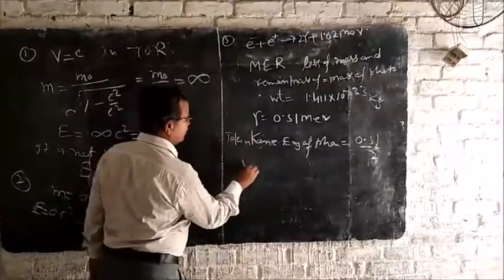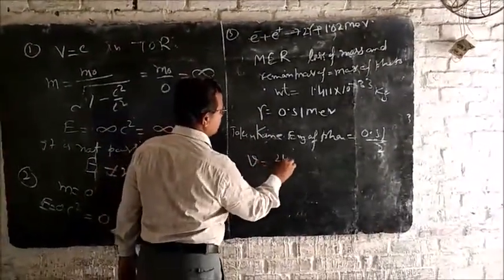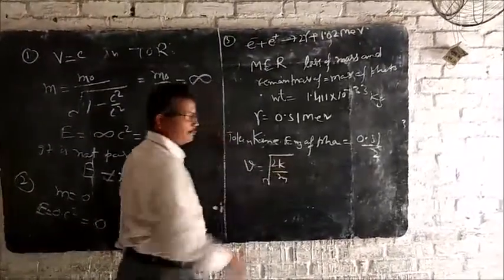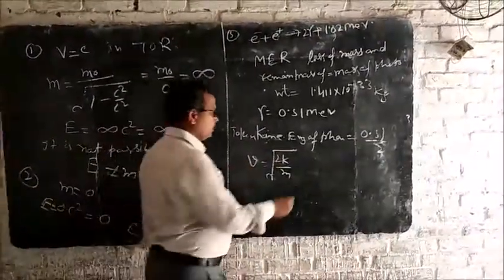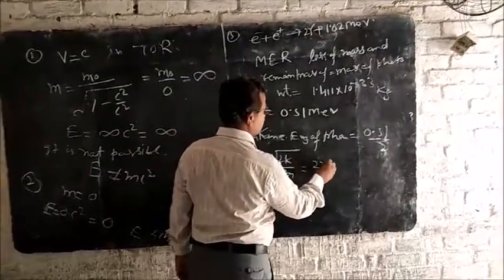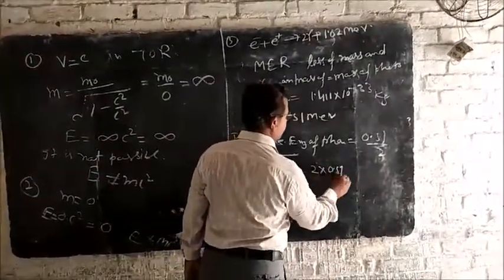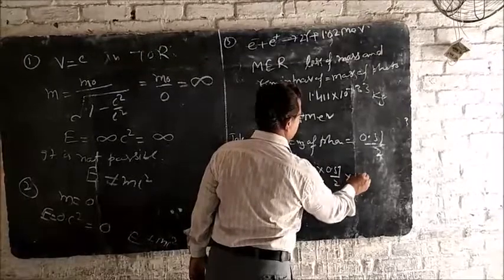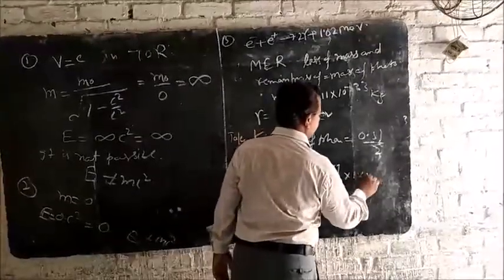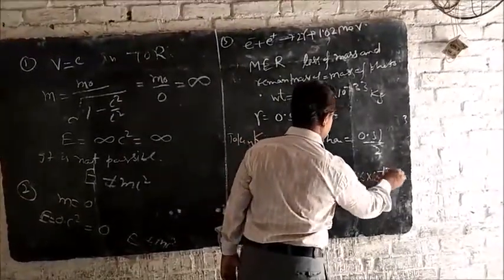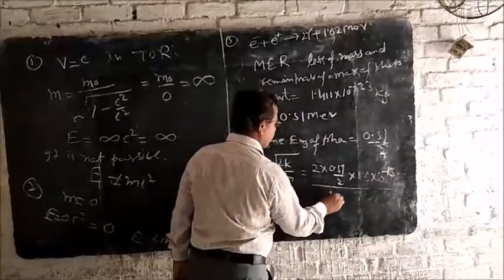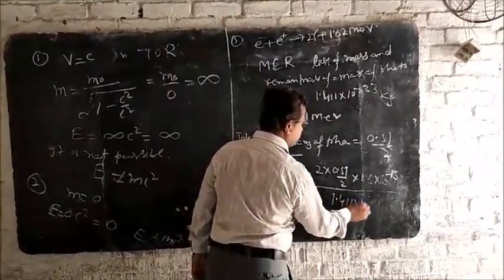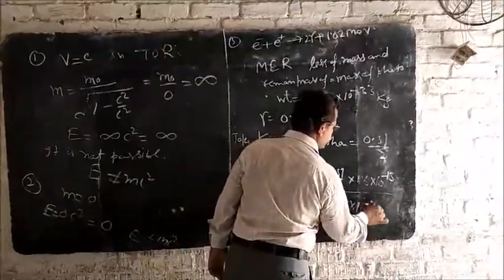Then, V equal to under root 2K upon EM. Putting these value, we get 2 into 0.51 by 2 into 1.6 into 10 to the power minus 13 joule upon mass 1.411 into 10 to the power minus 33 kg.